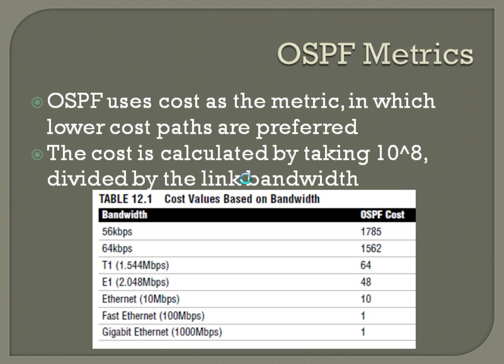The cost is calculated by taking 10 to the 8th and dividing that by the link bandwidth. There is a table of possible values for common bandwidth speeds on different links. 10 to the 8th is 100 million, so 100 million divided by 56,000 gives you 1785, and so on.